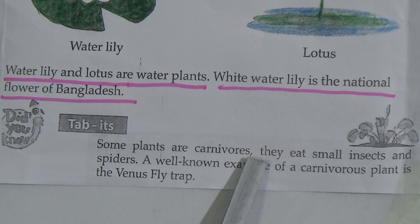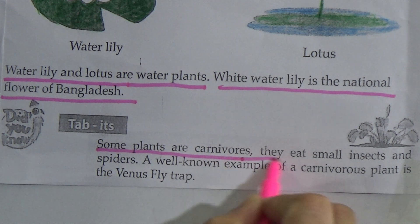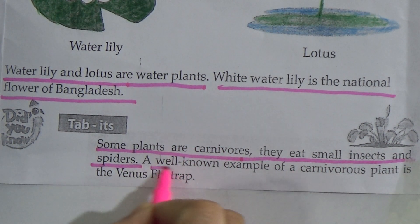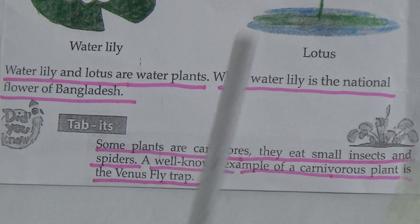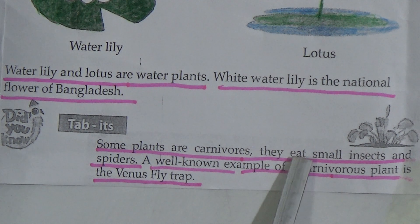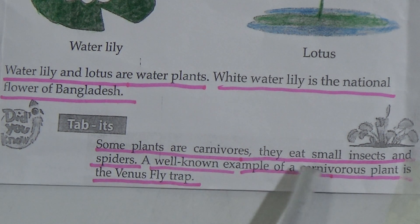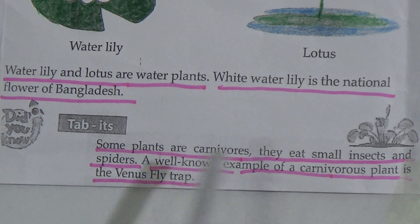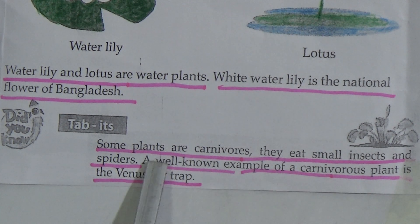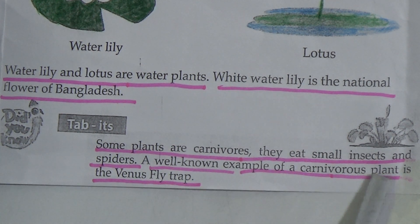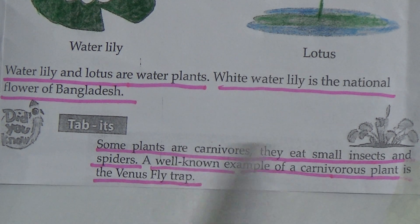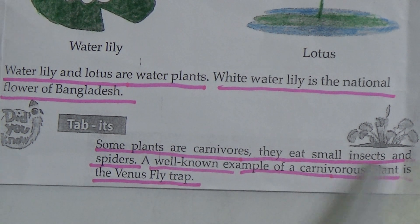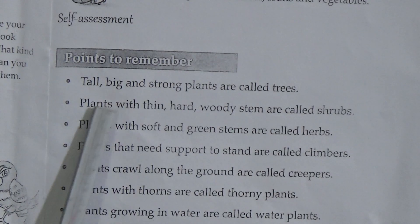Some plants are carnivores — they eat small insects and spiders. These plants are called carnivorous plants. A well-known example of a carnivorous plant is the Venus flytrap. This type of plant eats small insects and spiders.